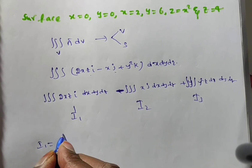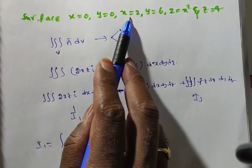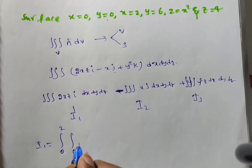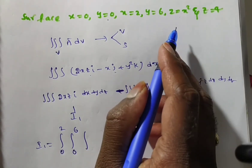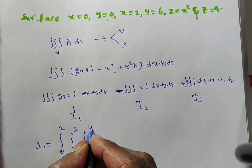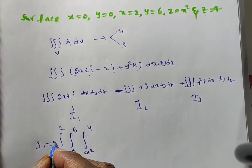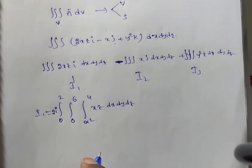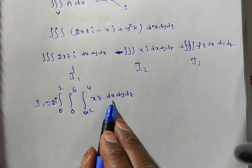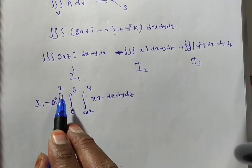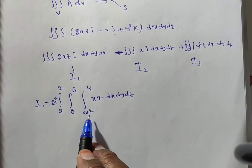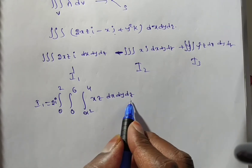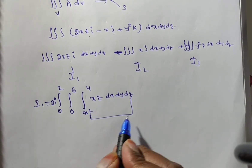For integral one, the limits are: x from 0 to 2, y from 0 to 6, and z from x² to 4. We take 2i outside, giving 2i times the triple integral of xz dx dy dz. Since z limits depend on x, we integrate with respect to z first, giving x·(z²/2) evaluated from x² to 4.